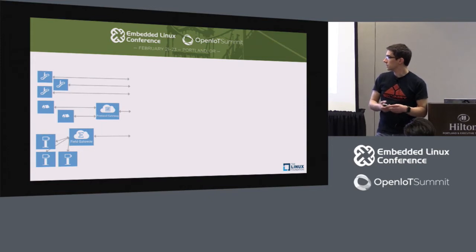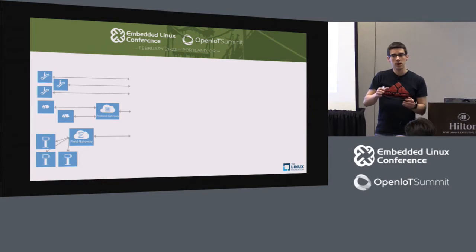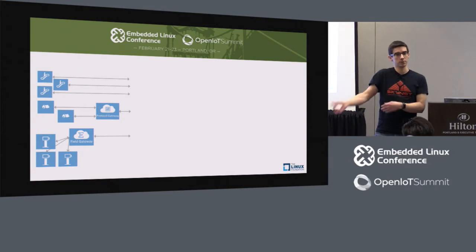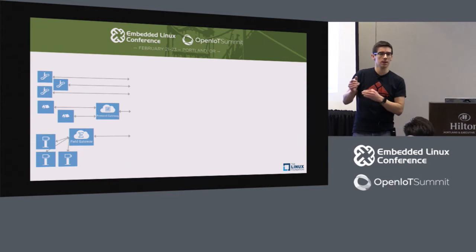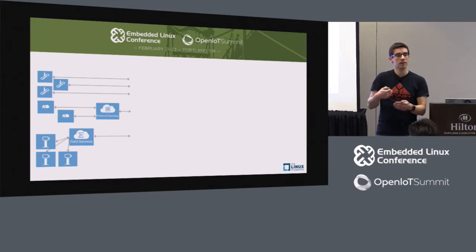The second thing we figured is that you might already have devices connected to the internet and these devices probably speak some sort of protocol. We support a few protocols, but maybe you have your own — you speak a protocol that we don't support yet. So it would be ideal to have a solution running in the cloud, in our data centers, that would speak your language and then transform that into stuff that Azure IoT can understand. That's the goal of the protocol gateway.